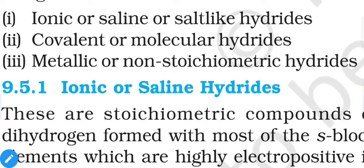Each of the three categories has at least two different names because they have different types of properties, which we can explain based on their names. Ionic or saline means they form ionic molecules containing ions. Covalent or molecular means they have covalent bonds and are molecular. Metallic or non-stoichiometric means these hydrides are formed with metals and do not follow stoichiometry — their molecular formulas have fractional rather than integer values.